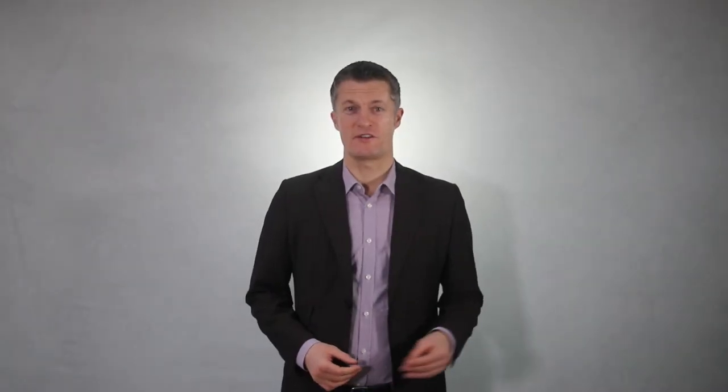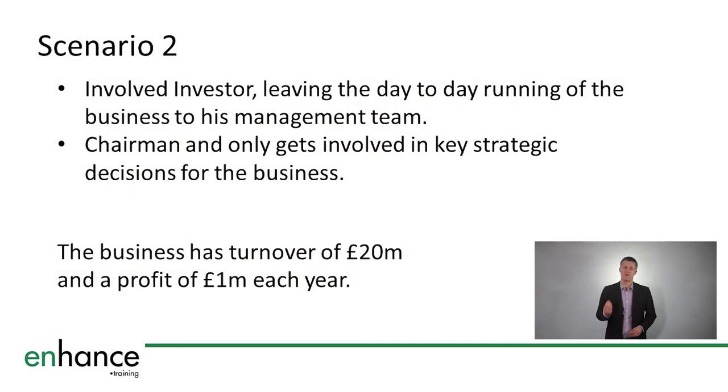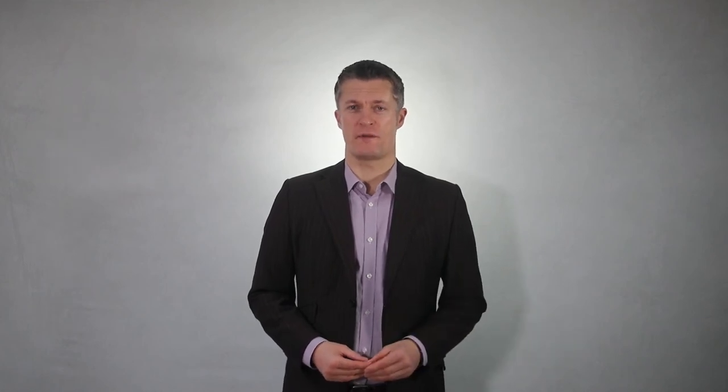And now onto Scenario 2, the business owner is an involved investor, leaving the day-to-day running of the business to her management team. The business owner holds the position of chairman and only gets involved in the key strategic decisions for the business and the business has a turnover of $20 million and a profit of $1 million each year. The lower profit is because of the extra costs of the management team.